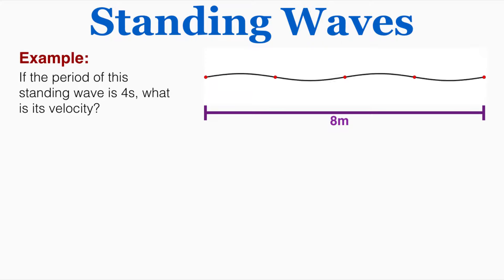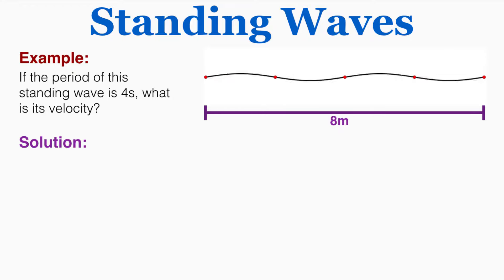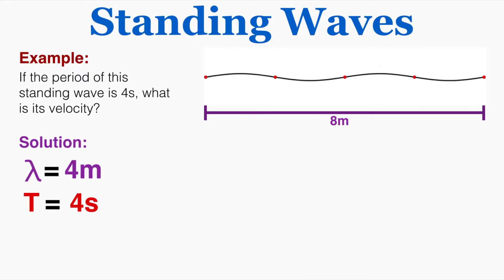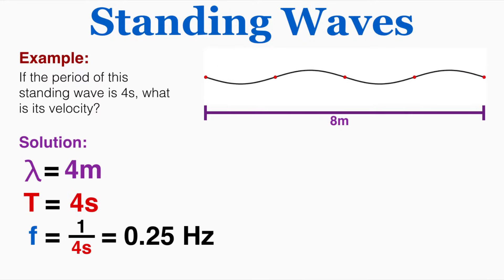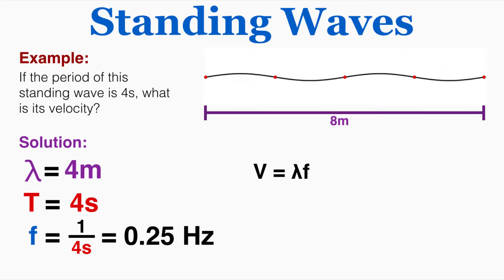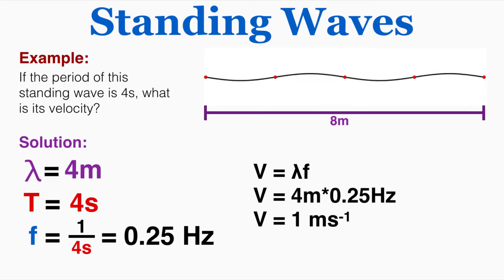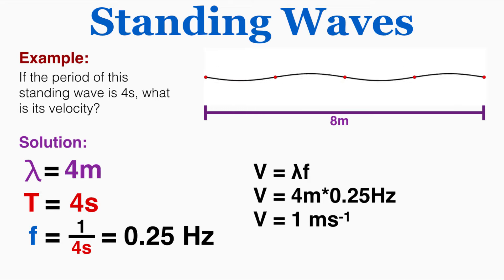As an example problem: if the period of this standing wave is four seconds, what is its velocity? The total length is eight meters, and since that spans two complete wavelengths, the wavelength is four meters. The period is four seconds, so the frequency — which is always one over period — is 0.25 Hz. The velocity equals wavelength times frequency, which gives one meter per second. So even though the standing wave isn't moving left to right, we describe it as having a velocity of one meter per second.